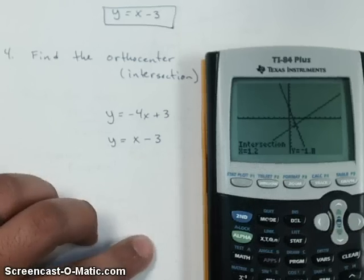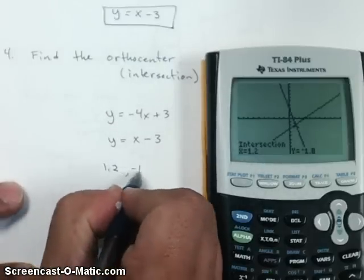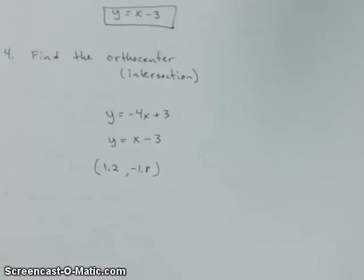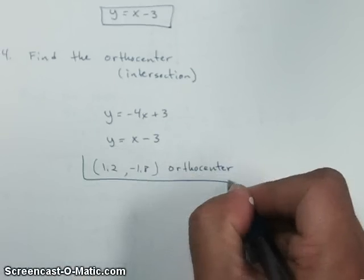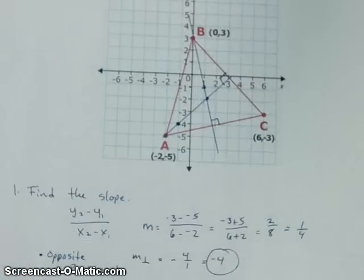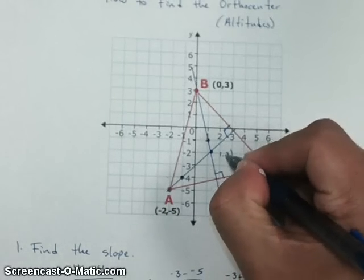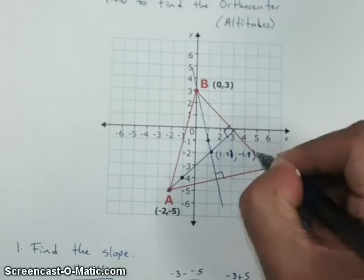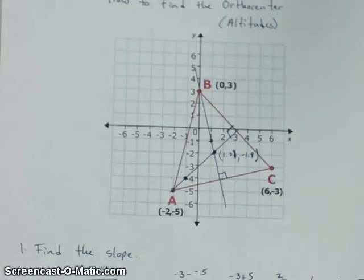So, from our calculator, we got 1.2 for my X value and a negative 1.8 for my Y value. Okay. So, that is my orthocenter. The orthocenter was 1.2 negative 1.8. So, again, if I go back over here to the graph, the original graph, this point right here is 1.2 negative 1.8. That's our orthocenter. Thank you.